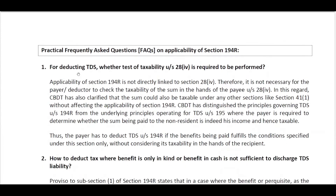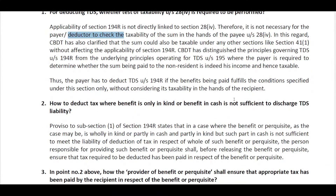The first question is: for deducting TDS, whether a test of taxability under Section 28(iv) is required to be performed — whether we need to check if the receipt or benefit or perquisite is taxable in the hands of the recipient. The circular clearly states it is not necessary for the payer/deductor to check the taxability of the sum in the hands of the payee — whether it is taxable or exempt.